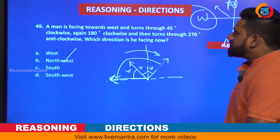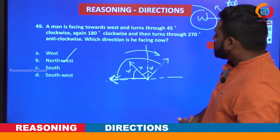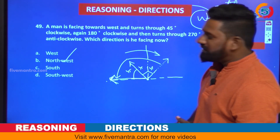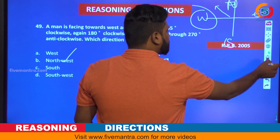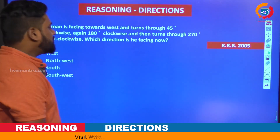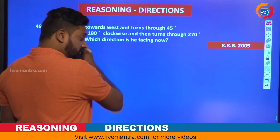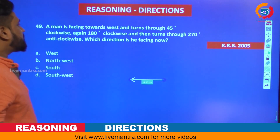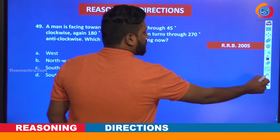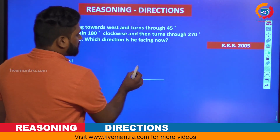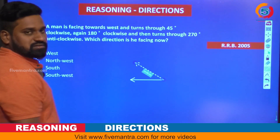A man is facing west and turns 45 degrees in the clockwise direction, then again 180 degrees clockwise, and then 270 degrees anti-clockwise. Which direction is he facing? This is from RRB 2005. Man is facing west — take an arrow pointing west. He turns 45 degrees clockwise — clockwise direction — so the new arrow is at the 45-degree clockwise position from west.